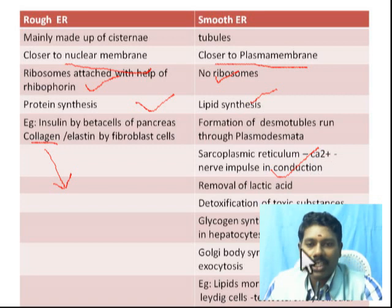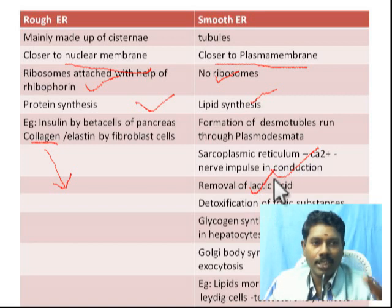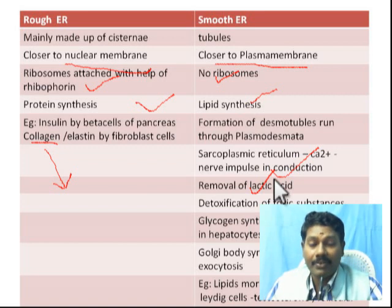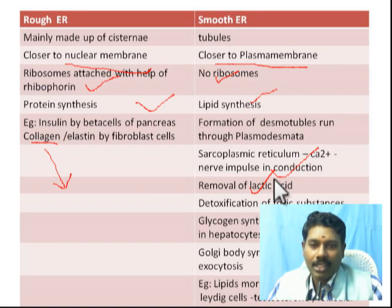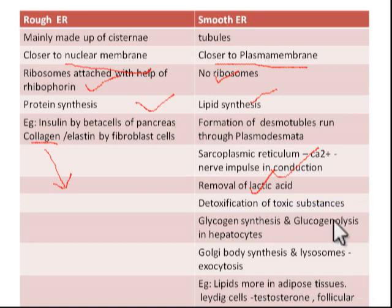Smooth ER also plays a very important role in the removal of lactic acid. In glycolysis, glucose, a 6-carbon molecule, is broken down to 3-carbon pyruvic acid, and under anaerobic respiration, lactic acid is produced. This lactic acid will be removed by smooth ER. Smooth ER is also involved in detoxification of toxic substances and glycogenolysis in hepatocytes.